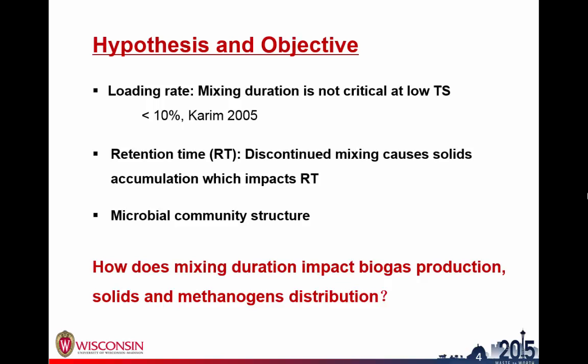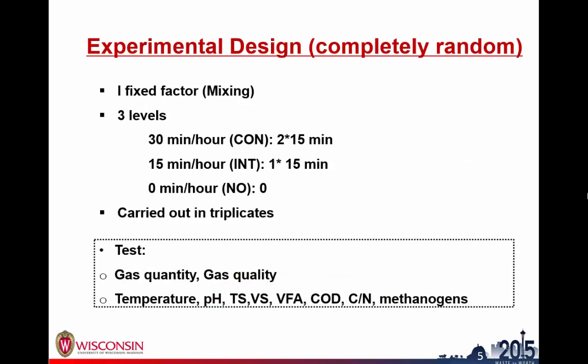The question we are trying to answer is: how does mixing duration impact gas production, solid distribution, and the methanogens in the digester? To answer this, we designed a one-factor experiment with three levels of mixing: nearly continuous mixing (CON), intermittent mixing, and no mixing. The mixing is carried out in 15-minute intervals total, with the continuous treatment mixing half the time, the intermittent treatment one quarter of the time, and no mixing for the control.